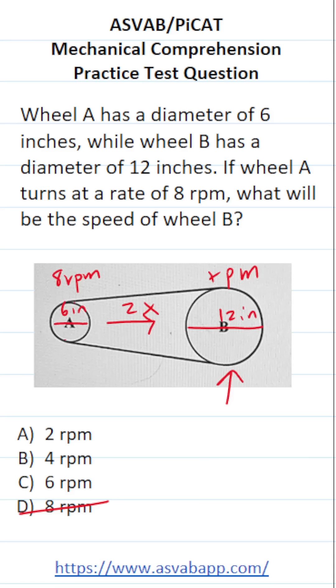As a matter of fact, it takes Gear A two rotations to spin Gear B once. So in other words, if Gear A is spinning at 8 RPMs, Gear B is going to spin 8 divided by 2 or 4 RPMs. So this one is going to be B.